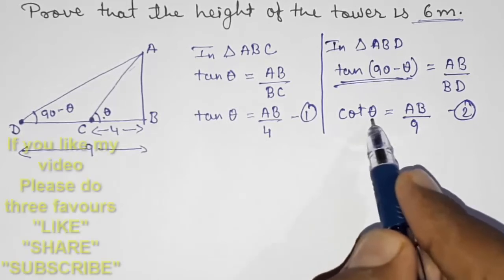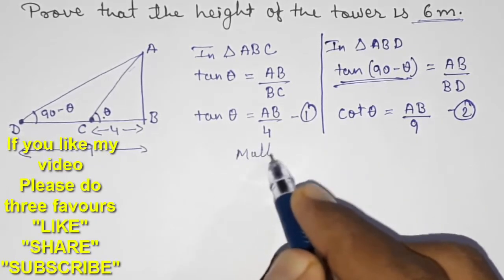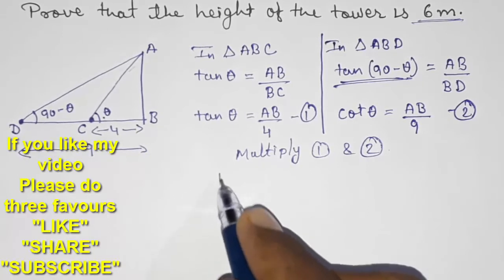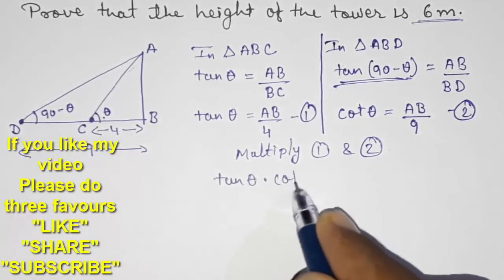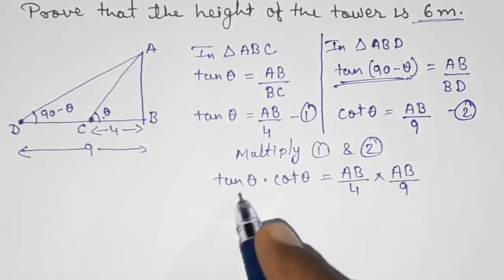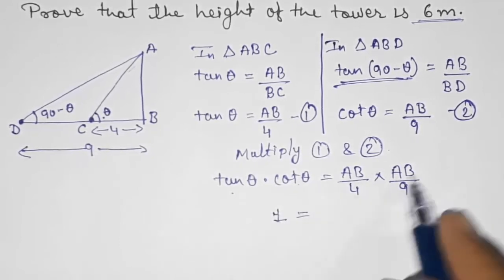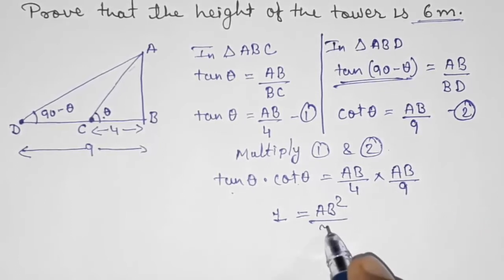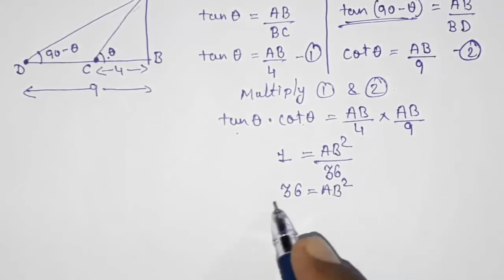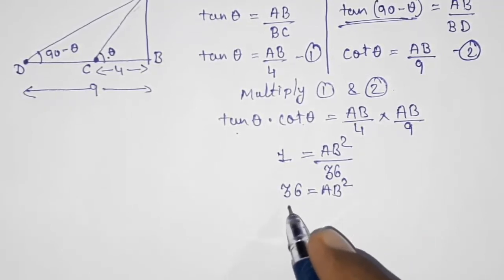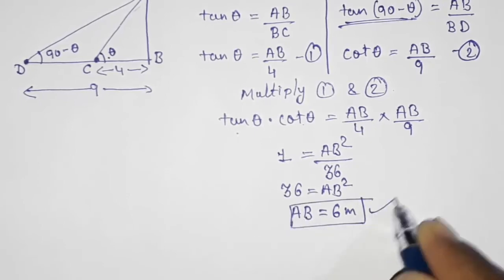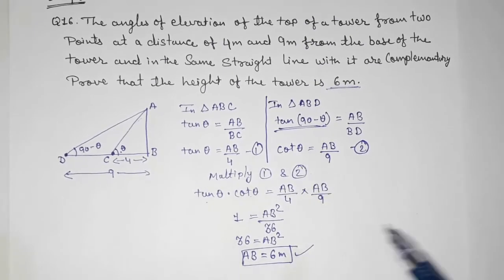We know that tan θ multiplied by cot θ equals 1. So multiplying Result 1 and Result 2: tan θ × cot θ equals (AB/4) × (AB/9), giving 1 equals AB² upon 36. Therefore AB² equals 36, so AB equals the square root of 36, which is 6. So AB equals 6 meters — the height of the tower is 6 meters.